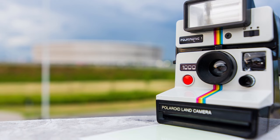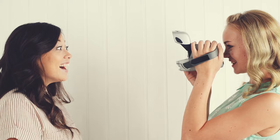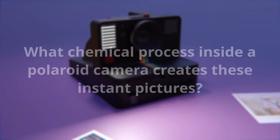Polaroid instant cameras were revolutionary when they first debuted in the 1940s. The ability to capture and develop a photo within minutes fascinated the public, but the question remained: what chemical process inside a Polaroid camera creates these instant pictures?